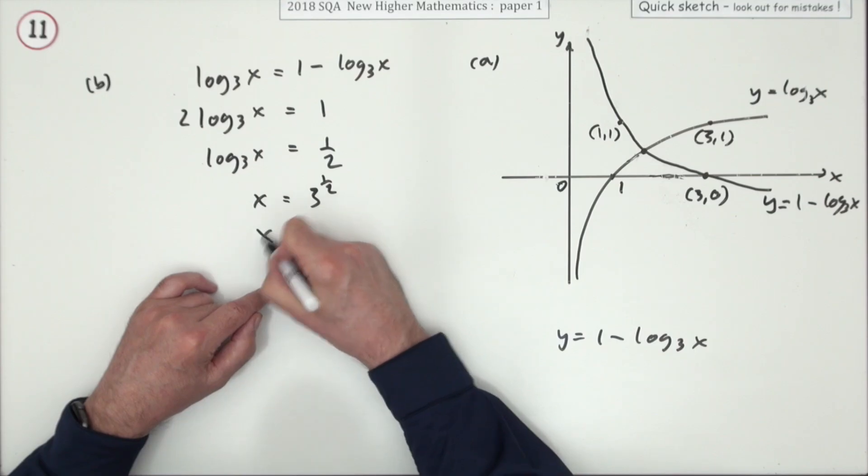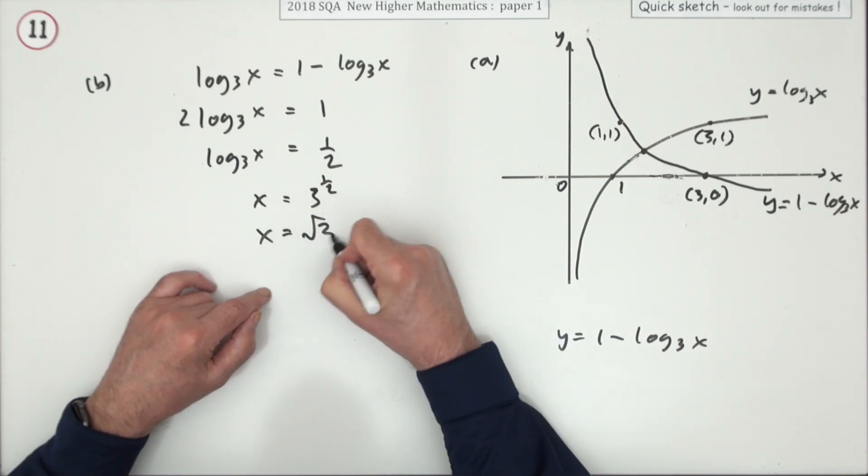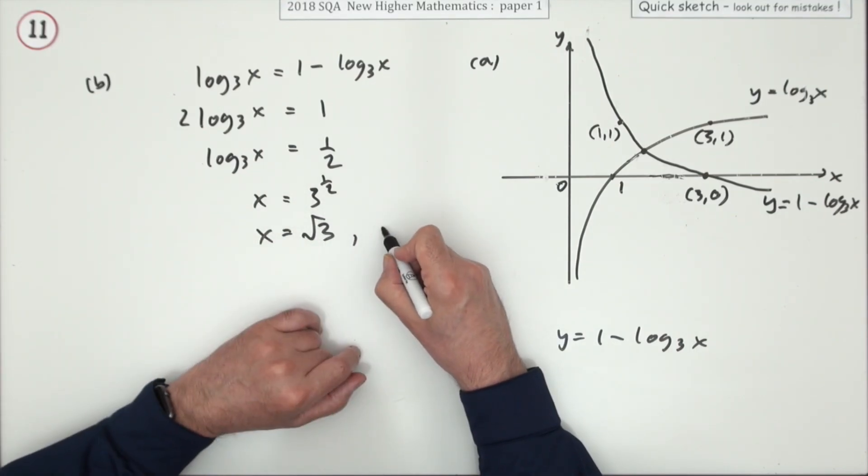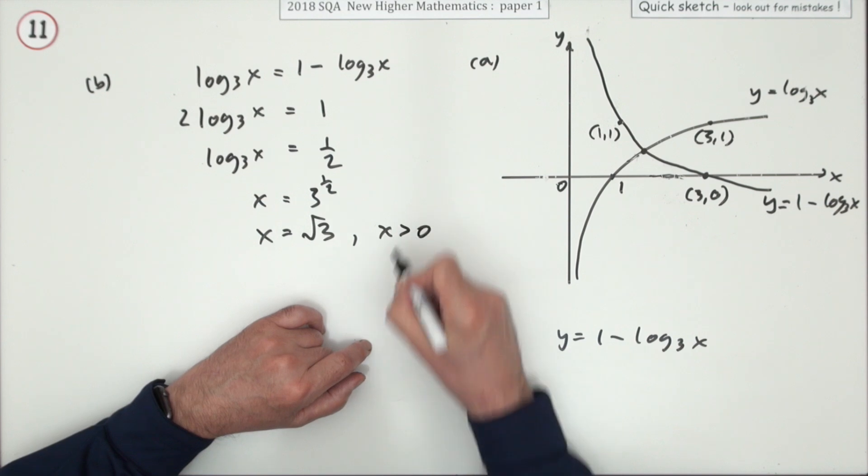And of course that means you've got the square root of 3, and it is the positive square root because x has to be greater than 0.